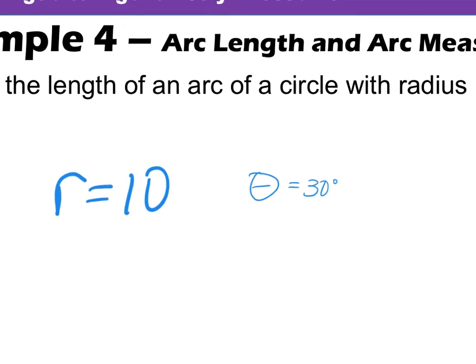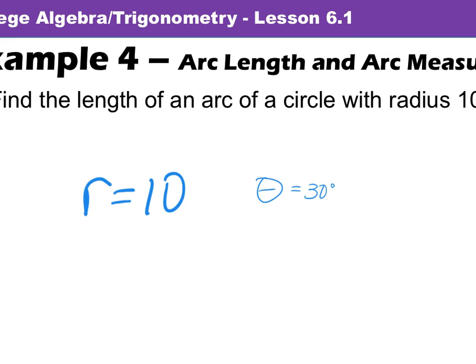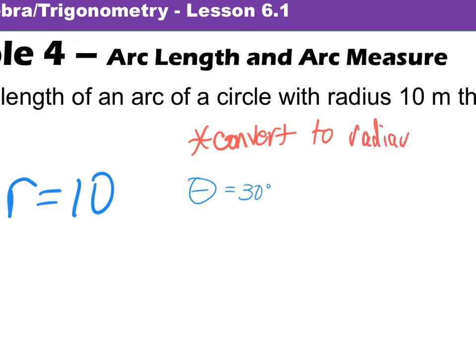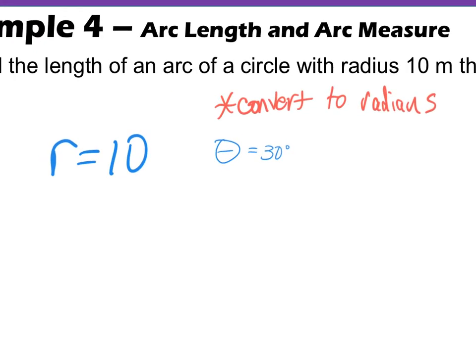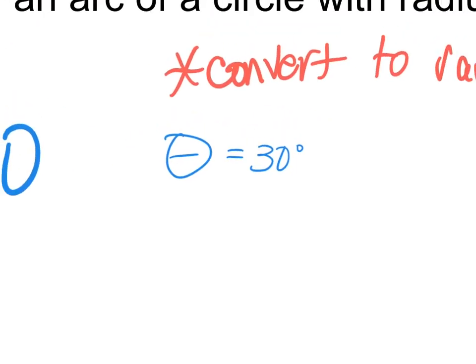Okay guys, here's something really, really important that you need to talk about. When we find arc length and arc measure, and they give us a central angle in degrees, we have to first convert to radians. That is super important. If you don't do that, you'll get the question wrong. So how do we convert 30 degrees to radians? Well, think about it.